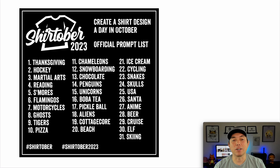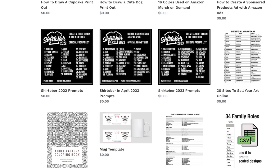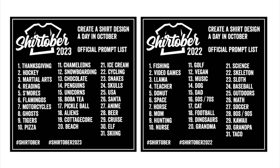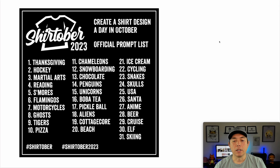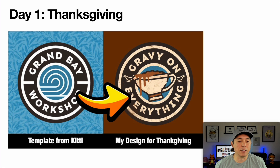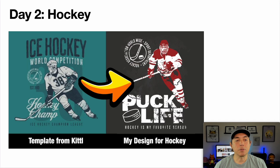Here's the list — you can download it on my website. Shirtober 2023, 2022, and an April Shirtober will all be available there. The list is a little different from 2022 to 2023, but all different so you can try out different niches and see which style works best for you. The first one is Thanksgiving — this Kittl template looks more like a hotel badge, but I used it for Thanksgiving. I just swapped out the middle, put in a gravy boat, changed the text, and there you go, pretty simple.